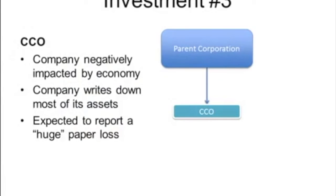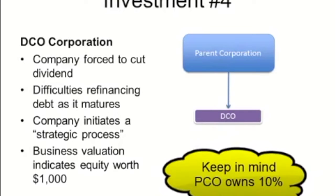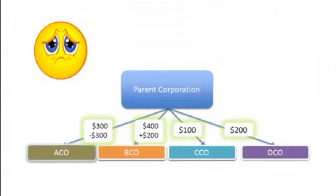C-Co was negatively impacted, and severely so, during the downturn in the economy. Management has signaled to shareholders that it will expect to write down many of its assets, causing a huge non-cash charge against regular earnings. DECO, too, had its share of issues. Early in the year, the company cut its dividend, followed by an announcement that it was having difficulties refinancing debt that was due to mature. Finally, the company announced that it was initiating a strategic review process. Arising from the review was a valuation of the company at year-end, indicating that the equity value of DECO was $1 million. And so went the second year of operations.